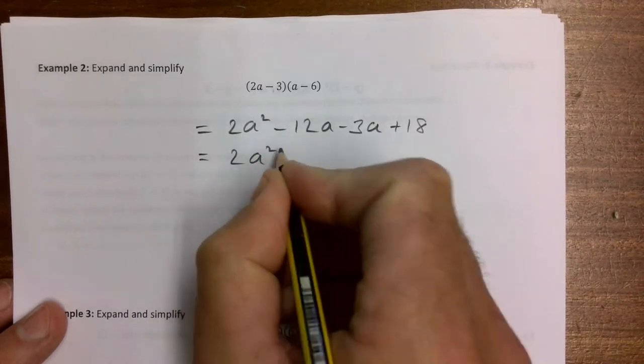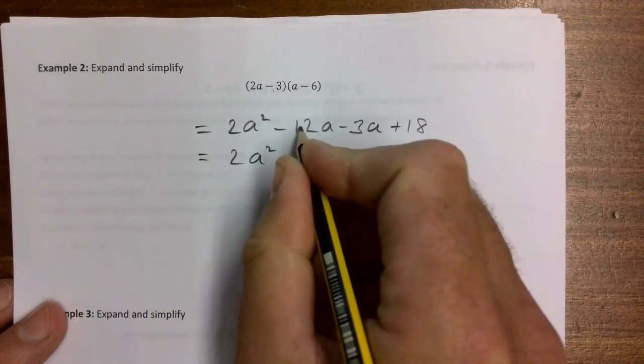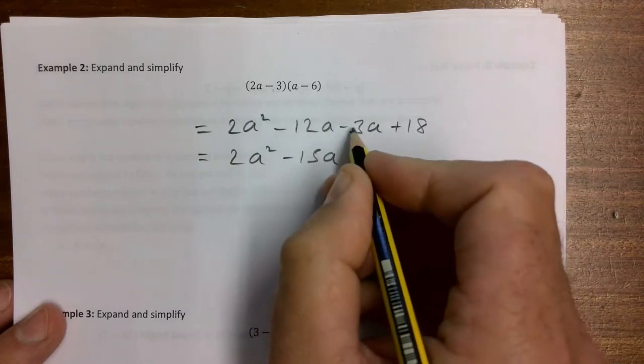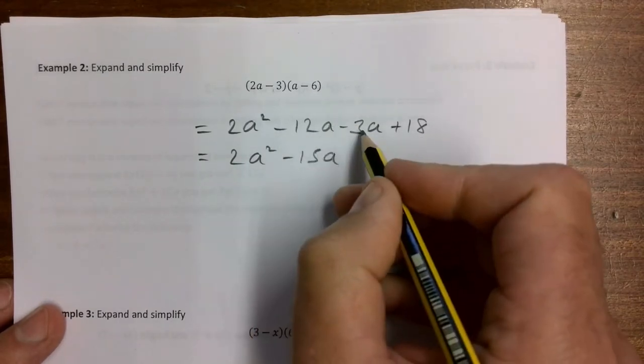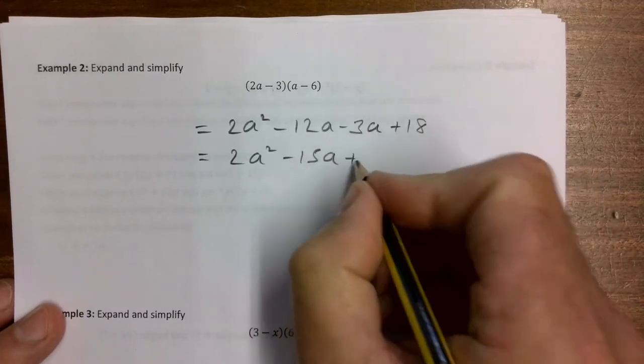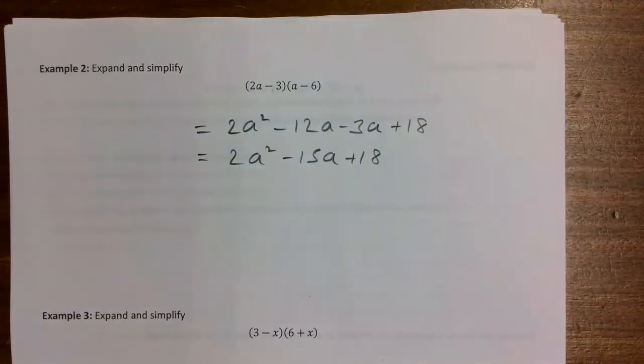So that's 2a squared minus 15a. Some people get confused here - they think 2 minus gives us a plus, but we're taking away 3a from minus 12a, so it's minus 15a plus 18.